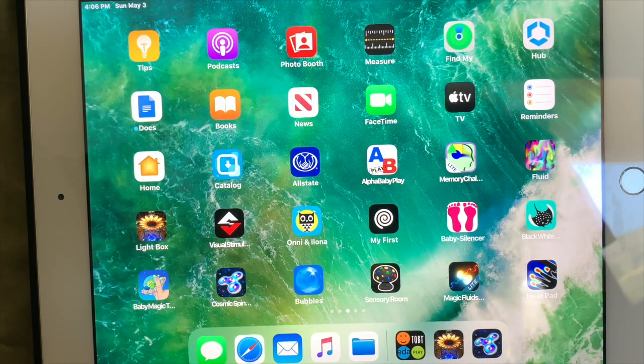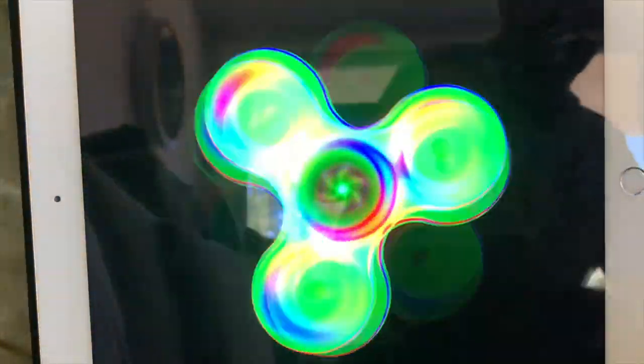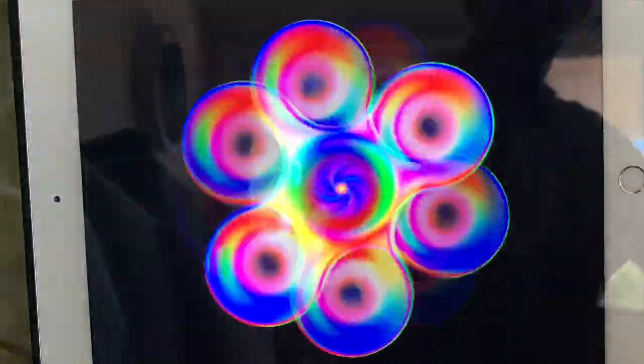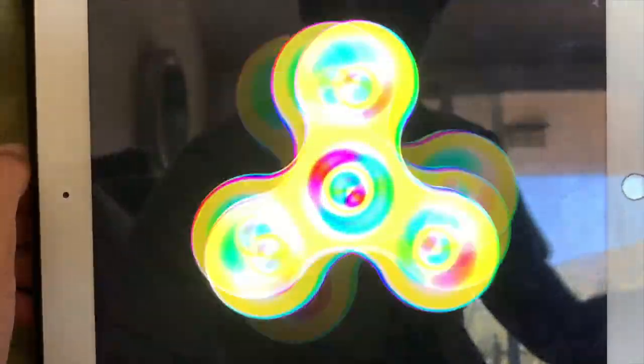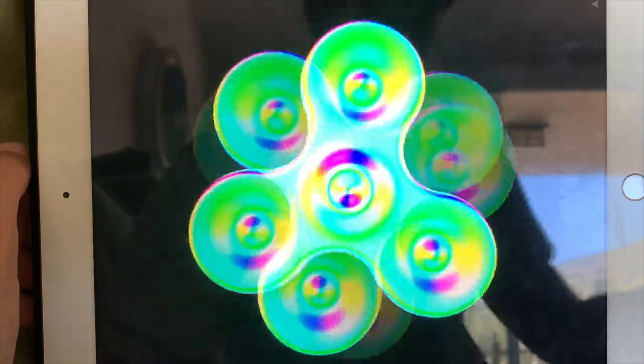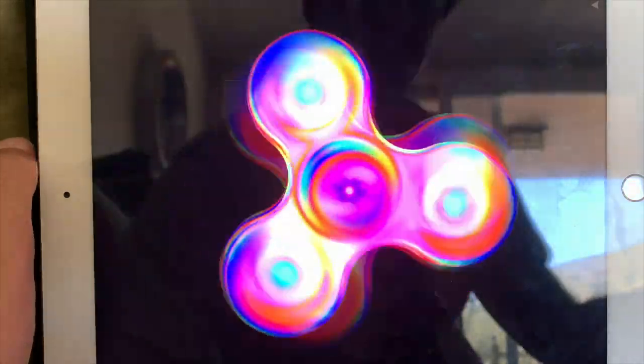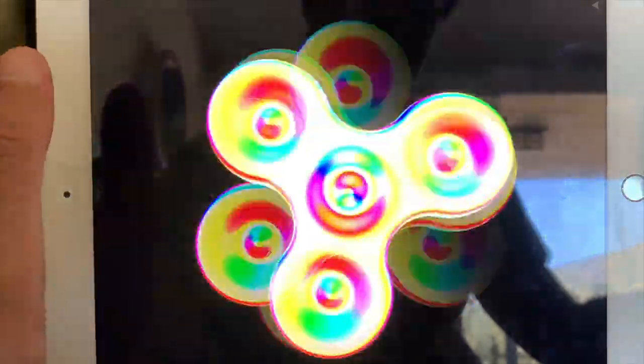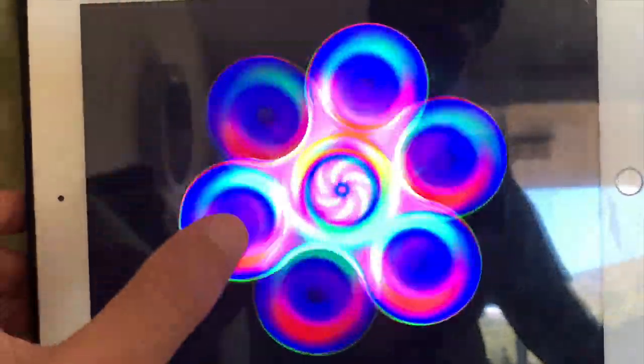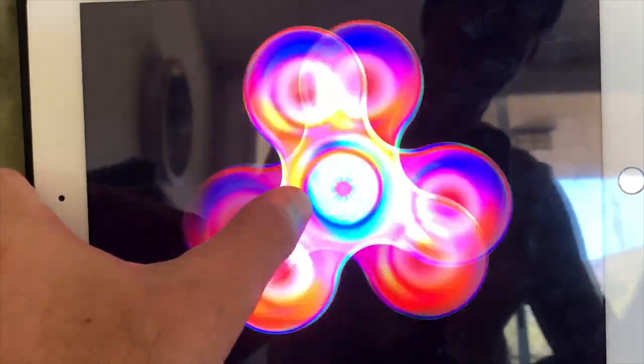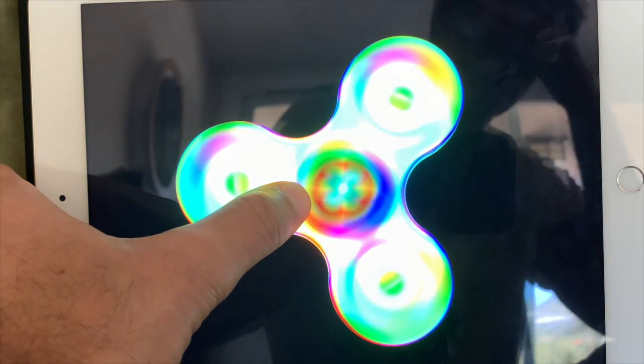The next sensory app I want to go over is called Cosmic Spinner. Okay, so there's a few different controls on this. One is just to tap it once and it changes the color. All right, tap it again and it goes back to the original color. Another control is to actually slow the spinner to a stop and all you do is hold down until it stops. And then you can release to have it spin again.